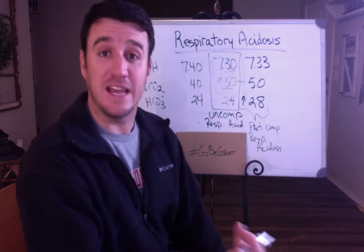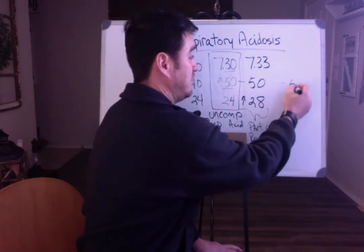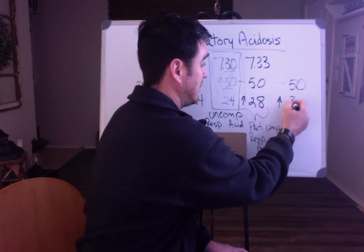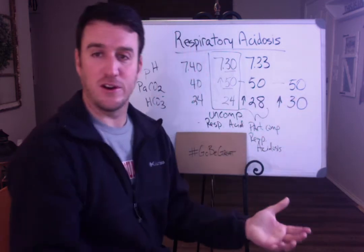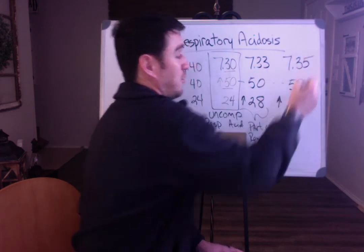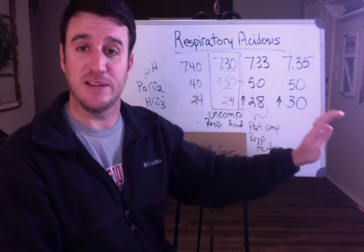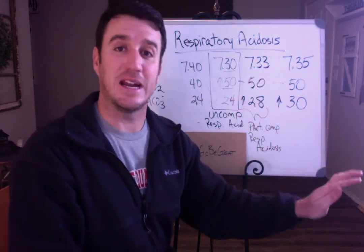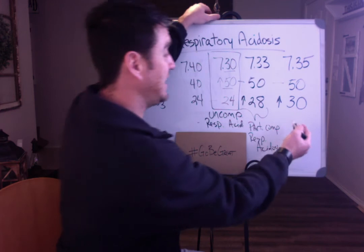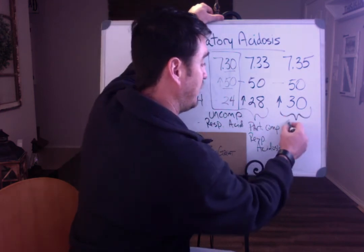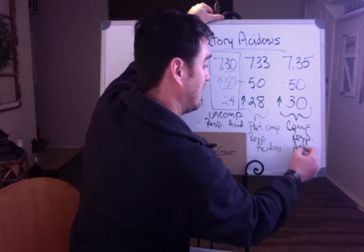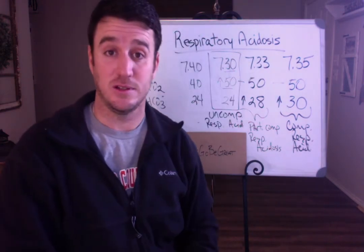Taking it a step further — CO2 stays at 50, bicarb continues to rise, let's say to 30, until the pH resumes to a normal range. Remember, 7.35 to 7.45 is normal, and that's where the body will try to compensate back to. When we see this, we know we're looking at a fully compensated respiratory acidosis.